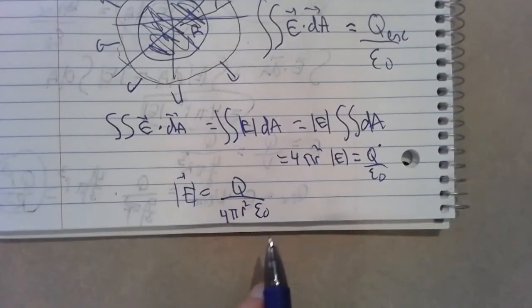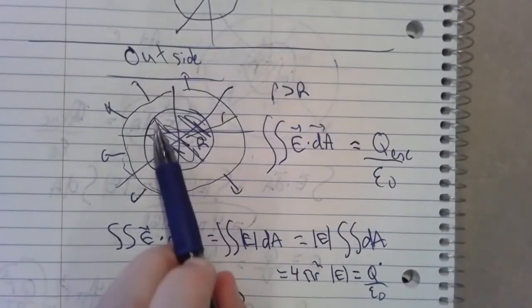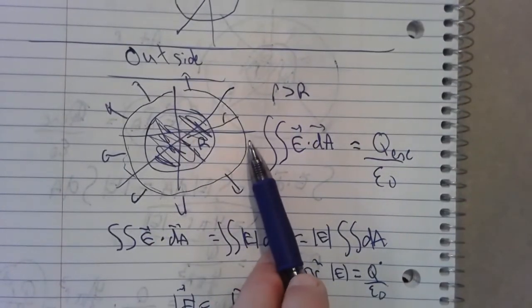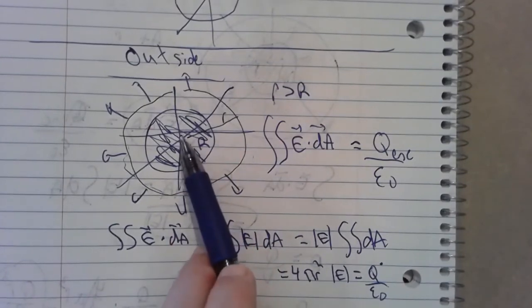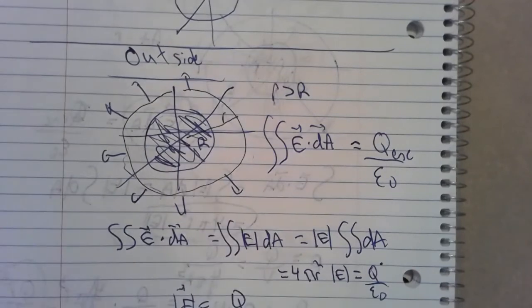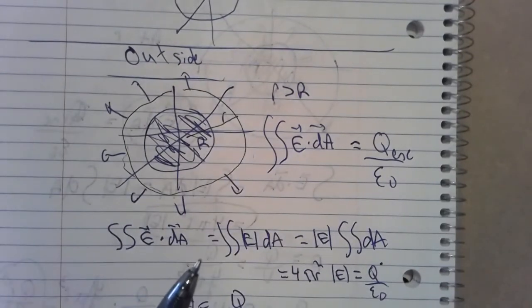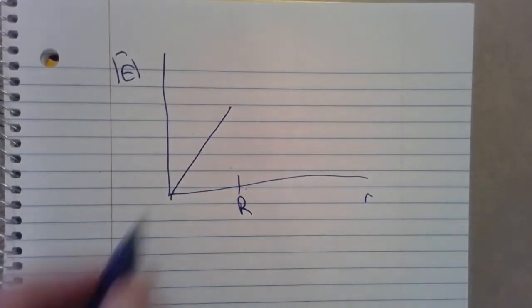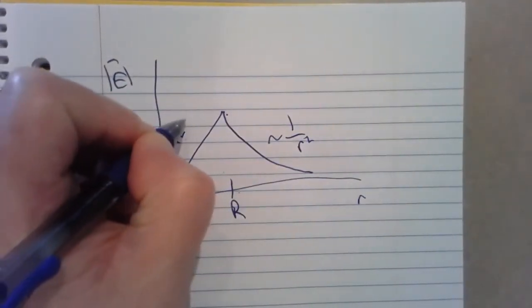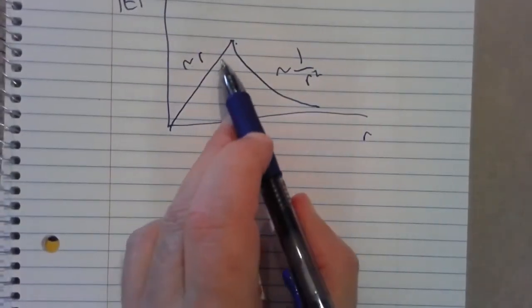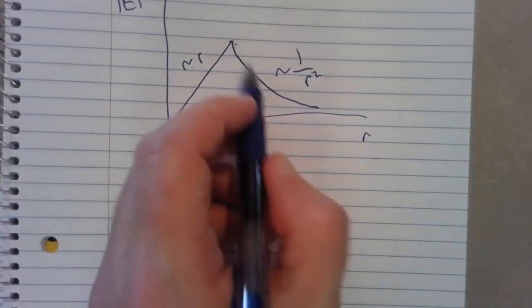That's Coulomb's law for a point charge centered at the origin. This means that if you're outside a sphere of charge, you literally cannot tell the difference between a giant ball of charge and a single point charge of the same amount at the origin — it looks exactly the same. Putting it all together: plotting E versus r, the electric field rises linearly inside until you reach the boundary, hits a maximum there, then drops off like 1/r² outside.